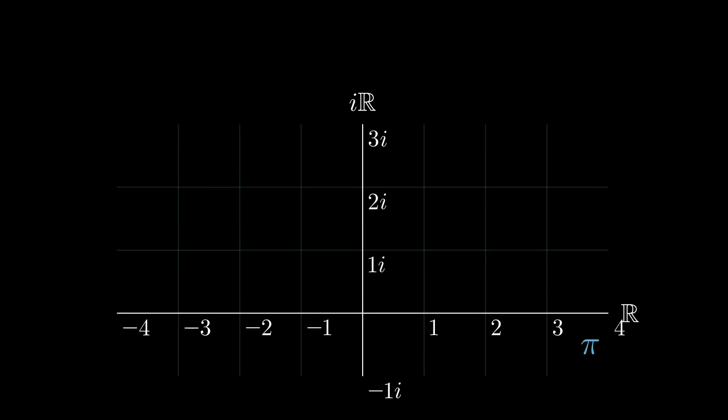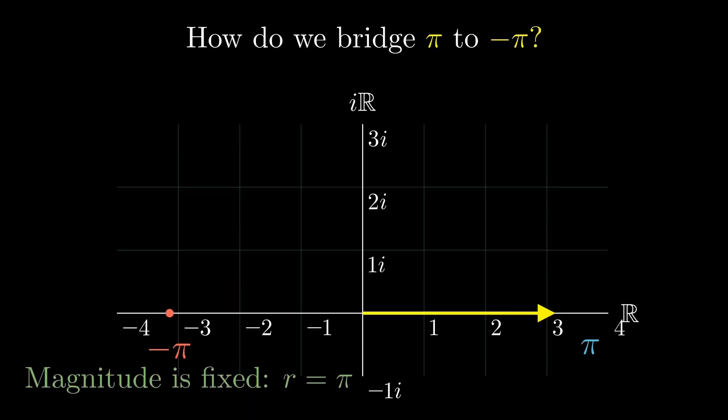We start here at positive pi. Our goal is to reach negative pi. But we cannot just cross through zero. We need a vector. We lock its length, its magnitude, at exactly pi. This distance will not change.